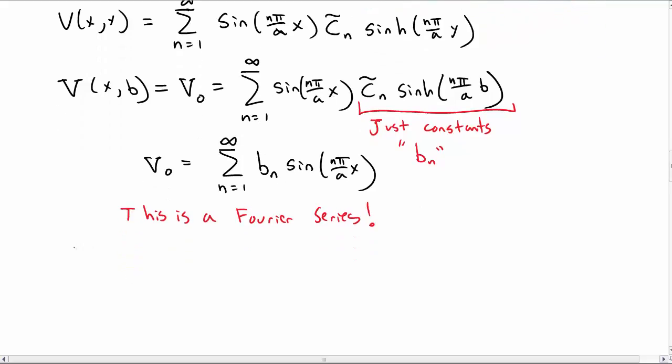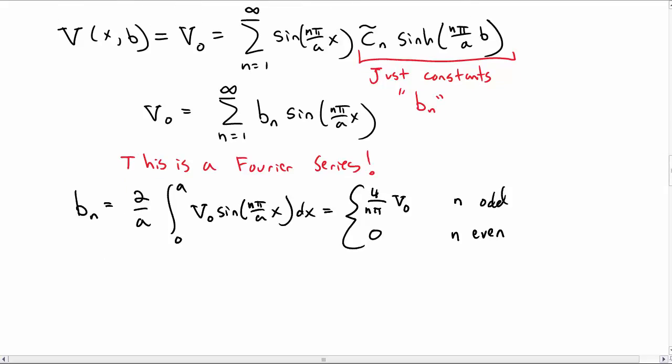We actually know what the solution for the b_n are. I'm just going to jump to that. So b_n are 2 over a integral from 0 to a V_0 times sin(n pi over a x) dx. And we could do this integral, so you get 4 over n pi V_0 if n is odd, or zero if n is even.